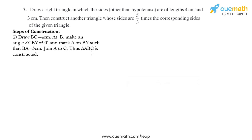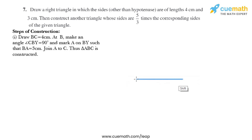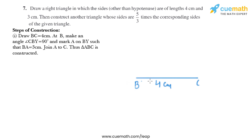So let's draw BC that measures 4 centimeter. This is B and this is C and it measures 4 centimeter. Now we need to draw angle CBY that measures 90 degrees. This is CBY and it measures 90 degrees.